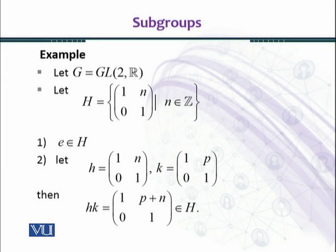When you add two integers, you get an integer. So p + n belongs to Z. Therefore, h * k belongs to H. This means that closure property is satisfied.